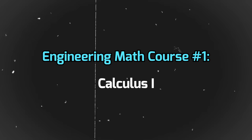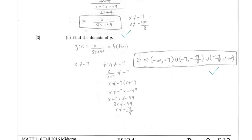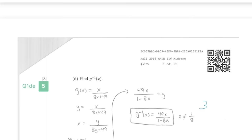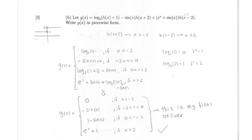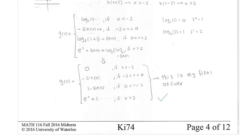The first course that all engineers have to take is Calculus 1, where we learn all about limits, derivatives, and integrals. The reason this is so important is because in engineering we deal with a lot of moving systems, and Calculus 1 allows us to model these systems and predict their motion.